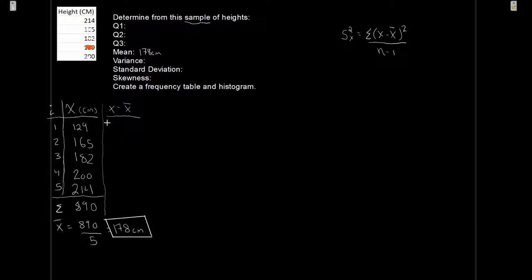129 minus 178, I get negative 49. 165 minus 178, I get negative 13. 182 minus 178, now I'm into the positives, I have 4. 200 minus 178, that's just going to be 22. And 214 minus 178, that's going to be 36. If you want, you can do a quick test. You can add them up quickly and we get zero. We did something right. Good.